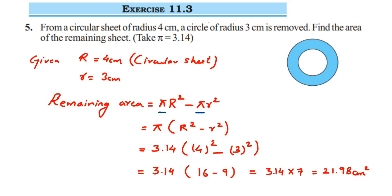If you had substituted directly, it would be 3.14 × 16 minus 3.14 × 9, which is much more calculation. So factoring pi out avoids those extra steps. That's it — we've got the answer. This was simple! If you have any questions or doubts, you can drop a comment below. Thank you for watching.